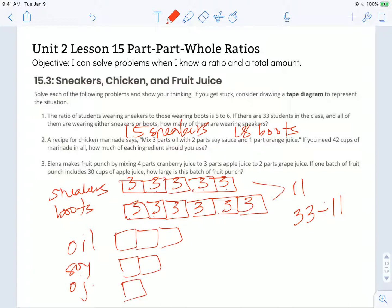That means I have a total of 6 parts. If you need 42 cups of marinade in all, so I need something times 6 equals 42, I would need 7 times as much of each of these parts. How much of each ingredient would you need? Well, I need 7 times as much of each of these parts. I would need 21 parts oil, I would need 14 parts soy sauce, and I would need 7 parts orange juice to complete this recipe.